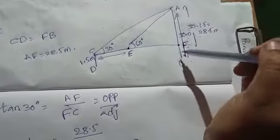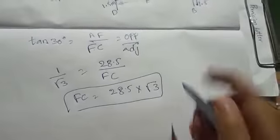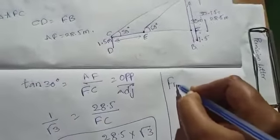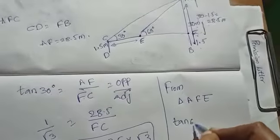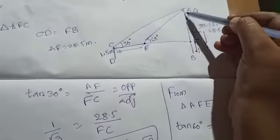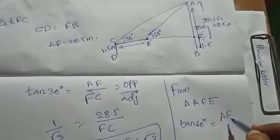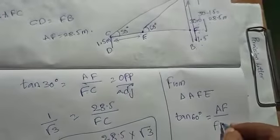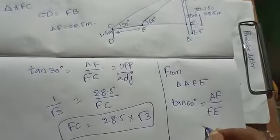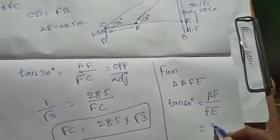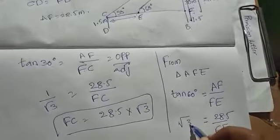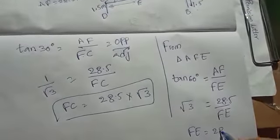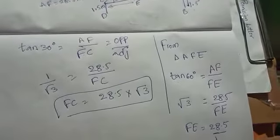From triangle AFE, which is also a right angle triangle: tan 60 degrees equals opposite side by adjacent side, that is AF by FE. AF equals 28.5. Since tan 60 degrees equals root 3, therefore FE equals 28.5 by root 3.